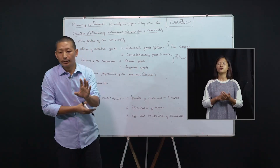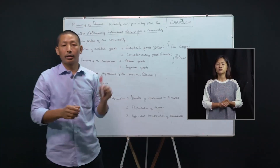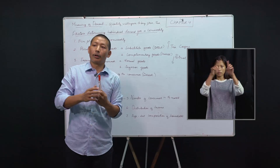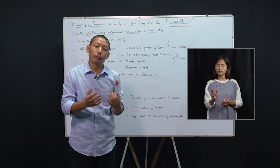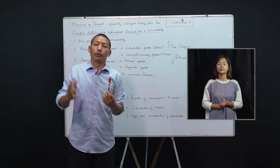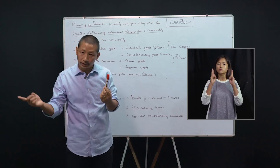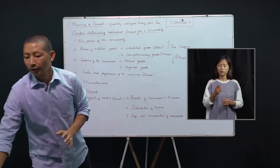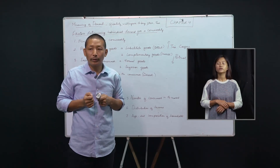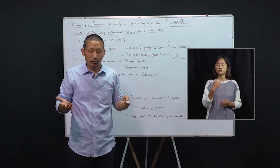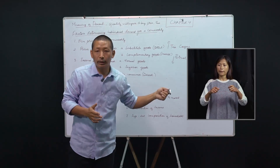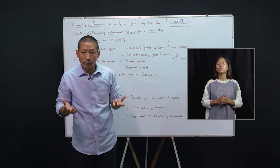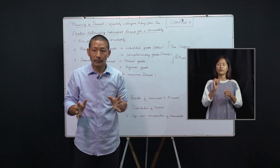Before we explain further, you should remember that one particular good — let's say this marker — might be a normal good for me because I'm a teacher and I need it on the board, but for others, this marker is not a normal good; they don't need it. So the same good can be a normal good for one person and an inferior good for another person. For me as a teacher, I need this watch, and therefore it is a normal good for me. But the one who works in a workshop does not need this watch, and therefore this watch is an inferior good for him.